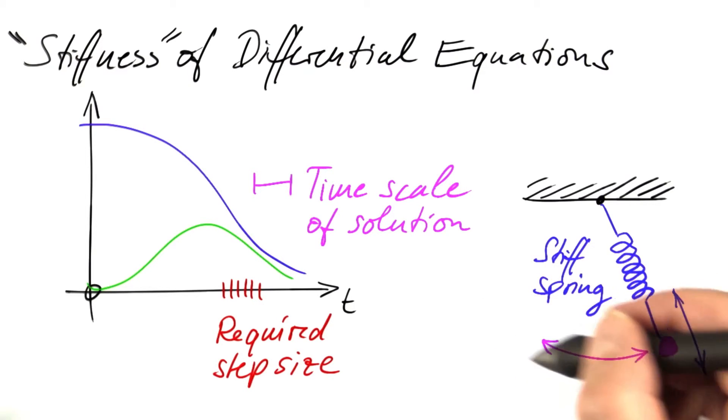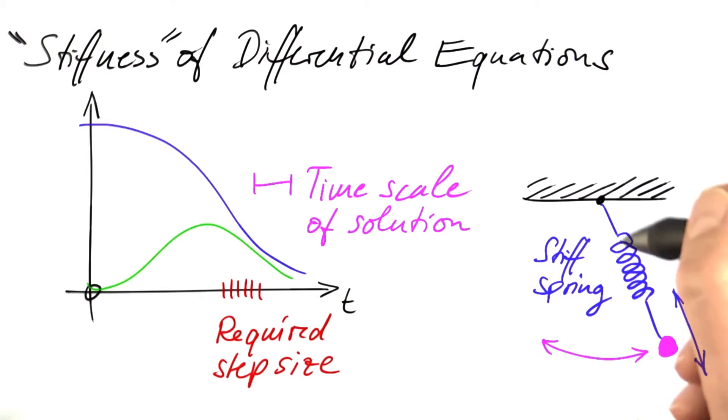Then we have two different time scales: the time scale of the swinging motion and the time scale of the oscillation of the spring. This time scale of that oscillation is going to be much smaller than the time scale of the swinging motion.